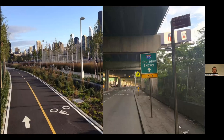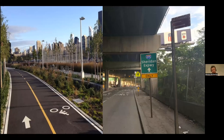Some neighborhoods, if we're looking at this photo, you can see there are fresh new bike lanes where other places barely even have a sidewalk. This disparity really led to the question: there's tons of data on this, but it's actually kind of hard to visualize, and secondarily, it's also hard to act on. So our question was really about public space — who gets trees, clean air, benches, parks, debris-free areas, quiet, cool summers?